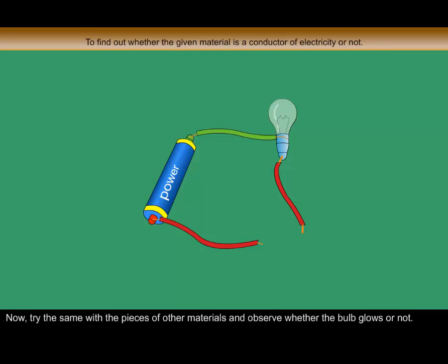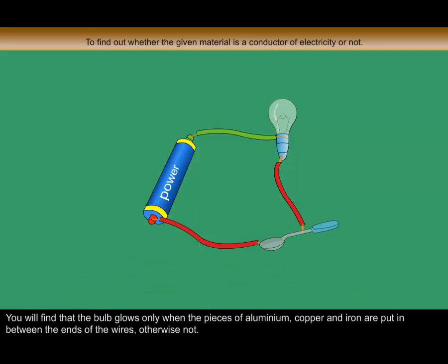Now, try the same with the pieces of other materials and observe whether the bulb glows or not. You will find that the bulb glows only when the pieces of copper, iron and aluminium are put in between the ends of the wires, otherwise not.